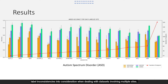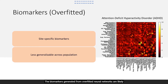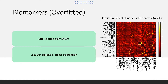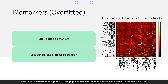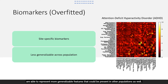The biomarkers generated from overfitted neural networks are likely to be site-specific and may not be applicable across populations. While features relevant to a particular subpopulation can be identified using site-specific biomarkers, it is still desirable to differentiate between site-specific and site-invariant biomarkers, as site-invariant biomarkers are able to represent more generalizable features that could be present in other populations as well.